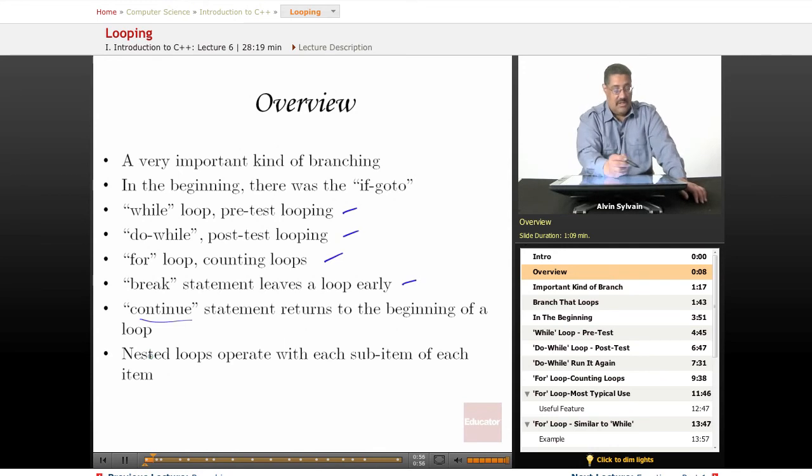The difference is the while loop checks the condition before going into the loop. Do-while checks the condition after going into the loop. A for loop can be used like a while loop but is usually used for a counting loop, but we're going to discuss all of this in a few minutes.